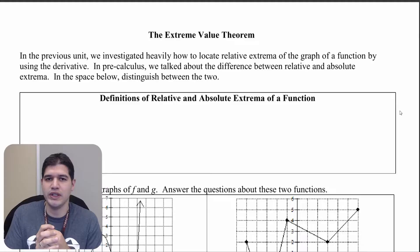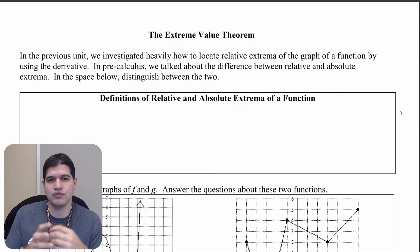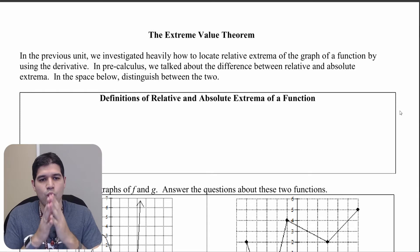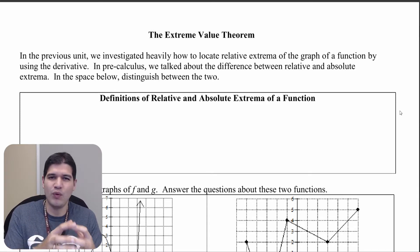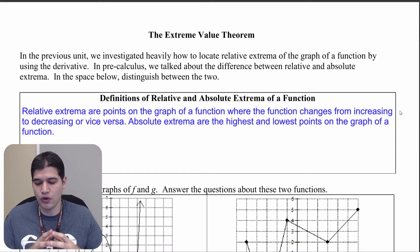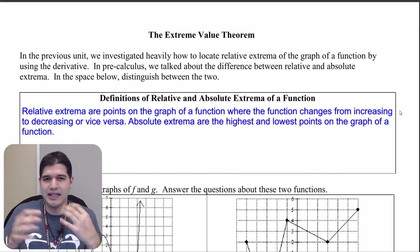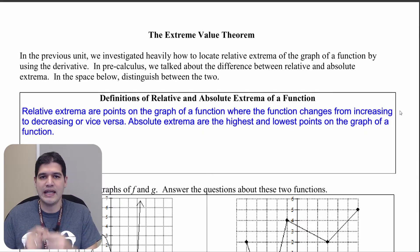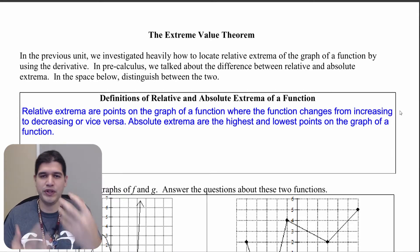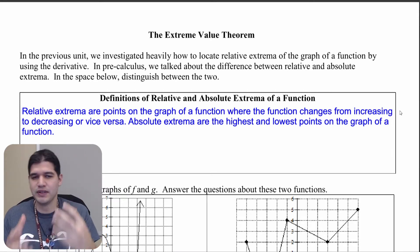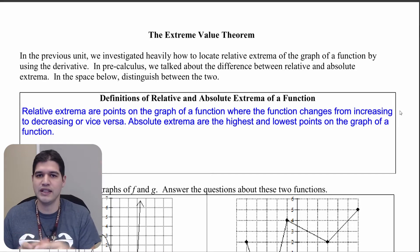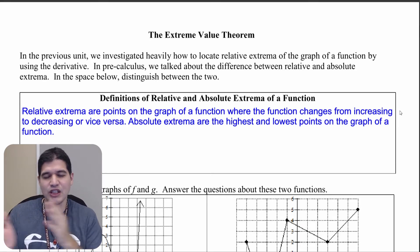I want you to dig back to your pre-calculus phase and think about what an absolute extrema is versus a relative extrema. A relative extrema is any point on the graph where it's changing from increasing to decreasing — so the first derivative is going from positive to negative — or it could go from decreasing to increasing, in which case we would have a relative minimum.